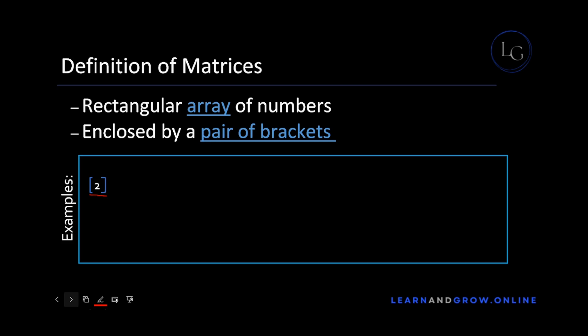Let's take an example of one element which is two here, and it is enclosed by a pair of brackets, so we will say that this is a matrix. In the next example we have two entries or elements, and it is a matrix as well as it fulfills both requirements. In the same way, the next example is a matrix as well — it is a rectangular array of numbers and it is enclosed by a pair of brackets.